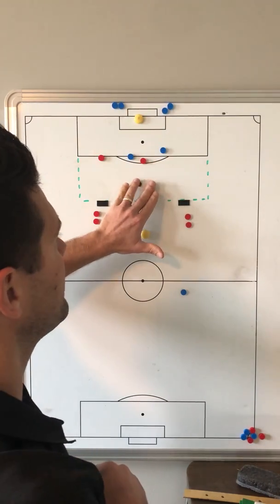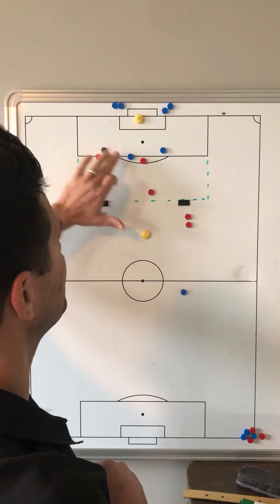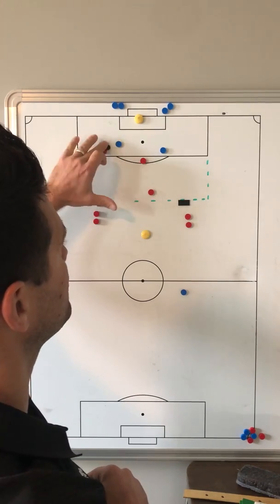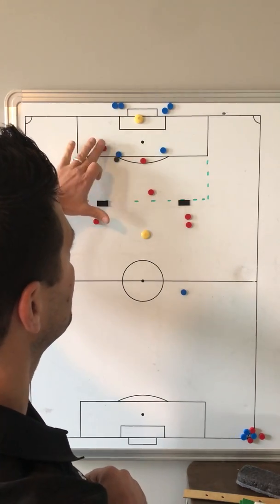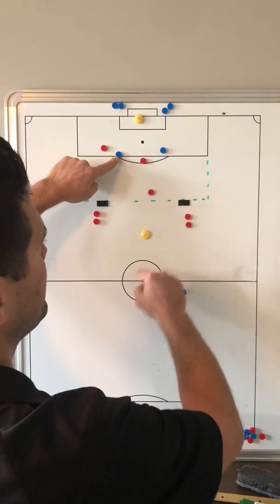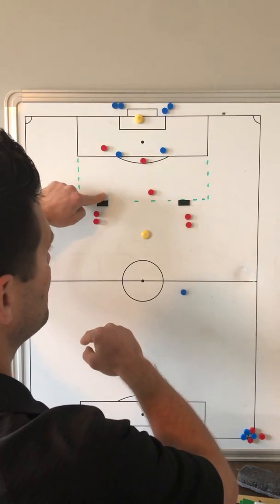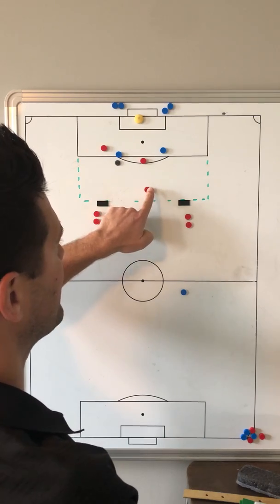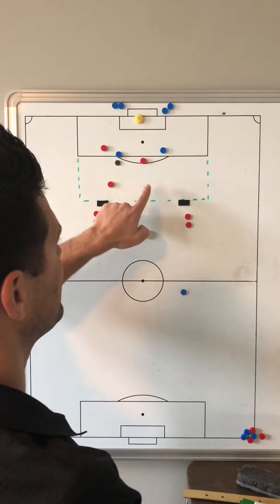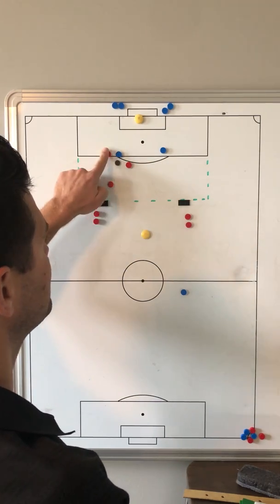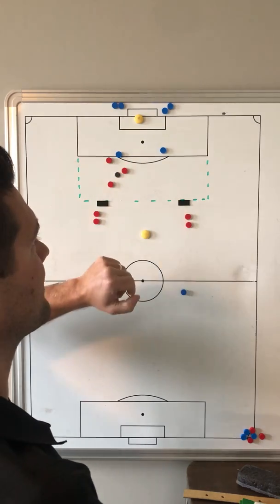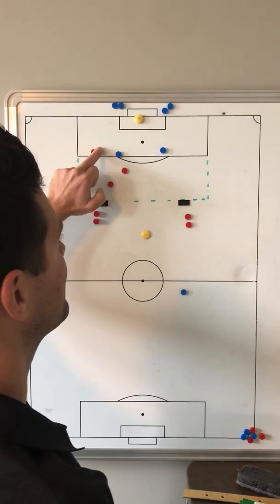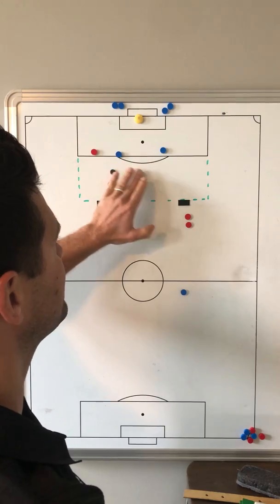If the defender closes them down and wins the ball, the defenders look to play out to the target. So immediately we have to counter-press — take away the goal, down-press to win the ball back. Once we win the ball back, we can find a way to open up the goal again.